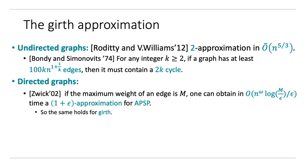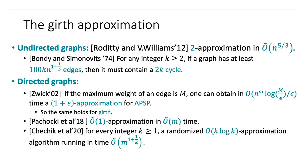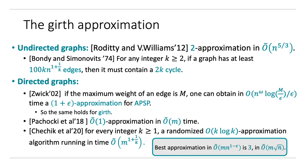The first non-trivial approximation for the girth in directed graphs is due to Pachocki et al. in 2018, which is a polylog approximation in linear time. Then Cechik et al. gave the first constant factor approximation in their STOC 2020 paper, showing a randomized O(K log K) approximation algorithm running in M to the 1 plus 1 over K time. The best approximation factor for running time better than MN is 3, and their algorithm runs in M times root N time.